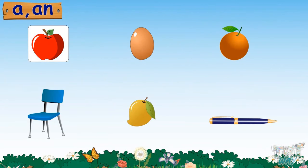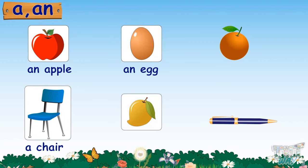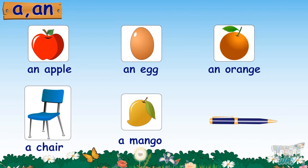This is an apple. This is a chair. This is an egg. This is a mango. This is an orange. This is a pen.